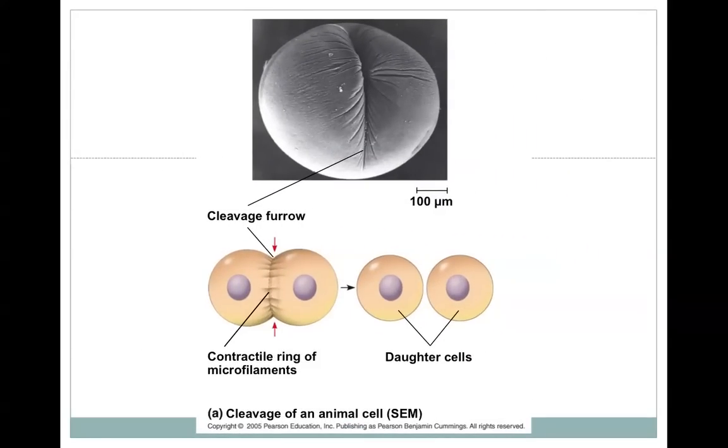Cleavage furrow here, this is cytokinesis in animal cells. That cleavage occurs through this contraction of this ring of microfilaments, which just kind of squeeze the cell in half until it physically breaks into two.